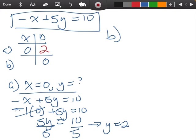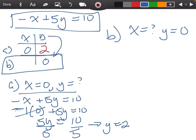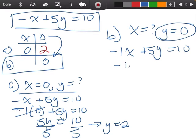Now we're going to do the same thing for part B. We don't know what the letter x is, but we do know that the letter y is 0. So again, I'm going to write this as negative 1x plus 5y equals 10, and we're going to plug in y equals 0.